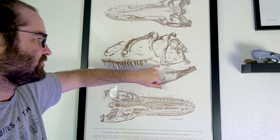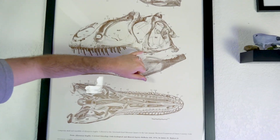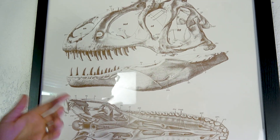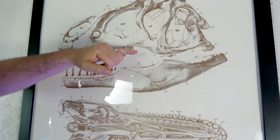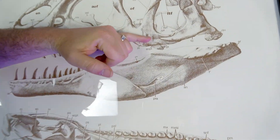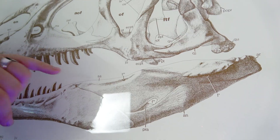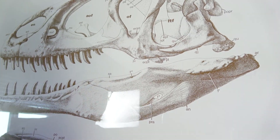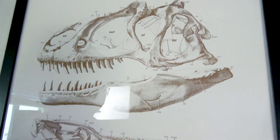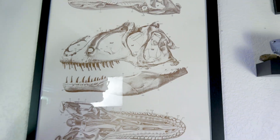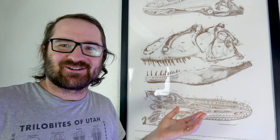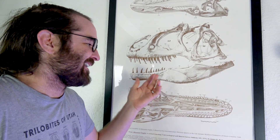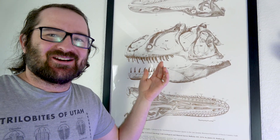There's also this part of the jugal bone that's really identifiable in Allosaurus fragilis versus jimmadsini. In jimmadsini, it's a lot more flat, whereas here you have this dip down in the back of the mouth. So yeah, very relevant to have this poster here — and then I just totally forgot that I had this poster here.